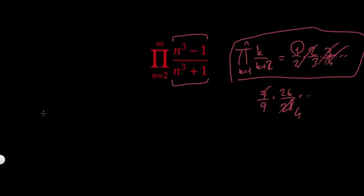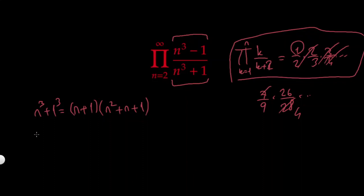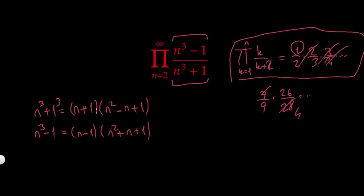Starting with the denominator: n³+1 factors as (n+1)(n²−n+1) by the sum of cubes formula. And n³−1 factors similarly as (n−1)(n²+n+1) by the difference of cubes formula. So I'm trying to find the recursive relationship between these factored forms.